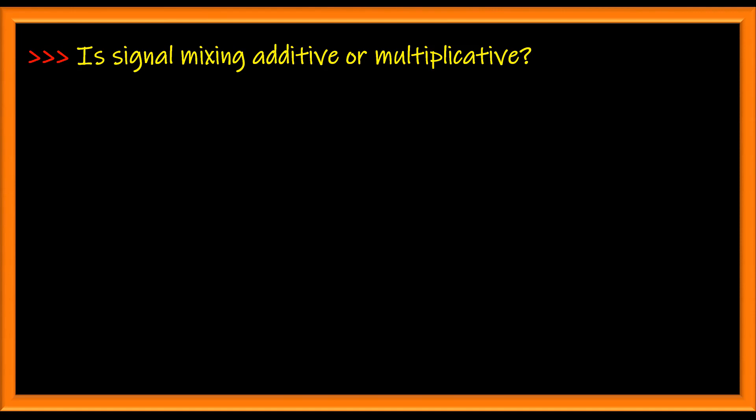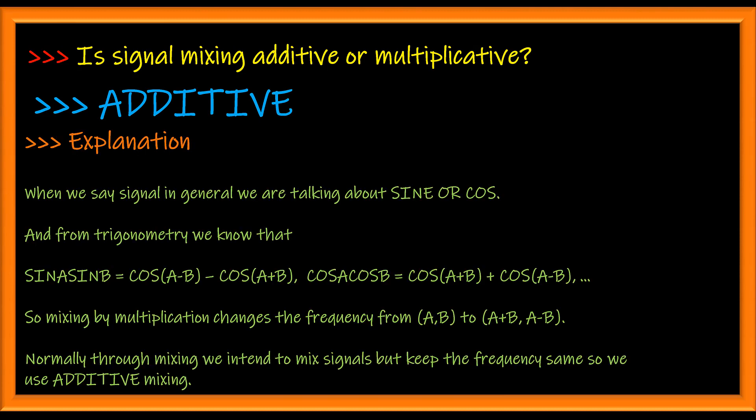Is signal mixing additive or multiplicative? Signal mixing is mostly additive. Because when you multiply two sines, two cosines, or a sine and a cosine, you end up altering the frequency of the signal from a and b to a plus b and a minus b. Since frequency alteration is not expected when you mix signals, we use additive mixing.